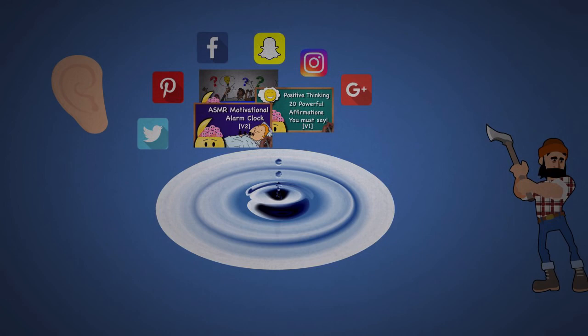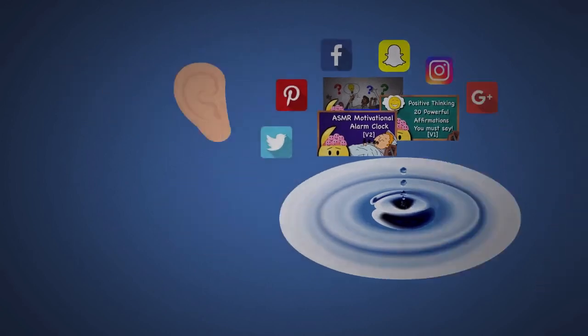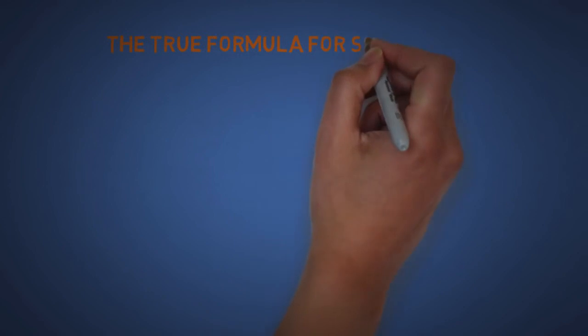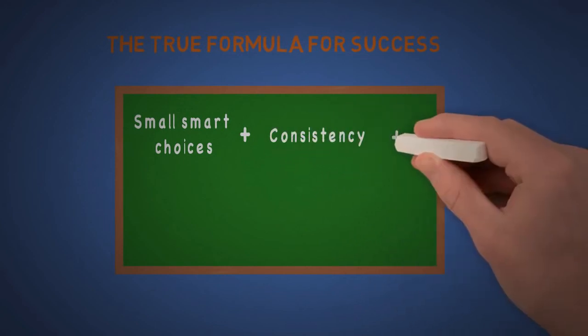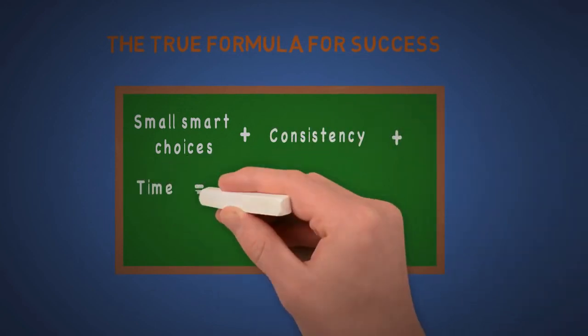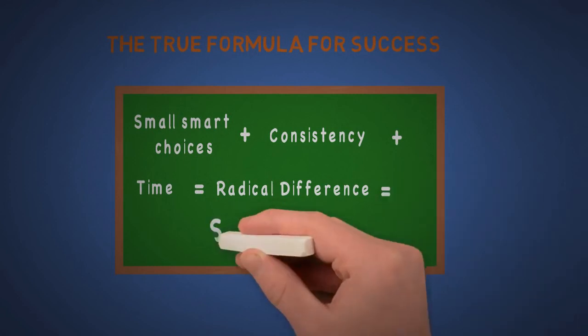And I'd like to look back at this video in the future and see how much my consistency has paid off. Now for the true formula for success, it's really simple. Small smart choices plus consistency plus time equal radical difference, equal success.